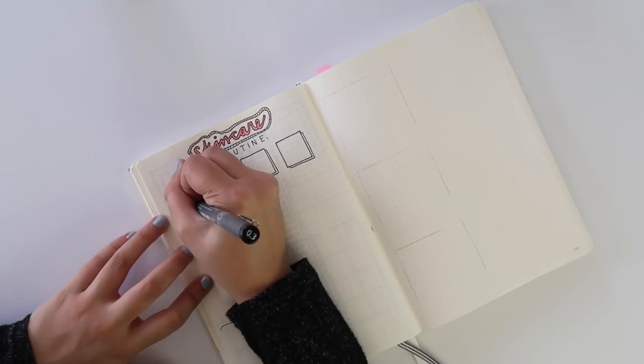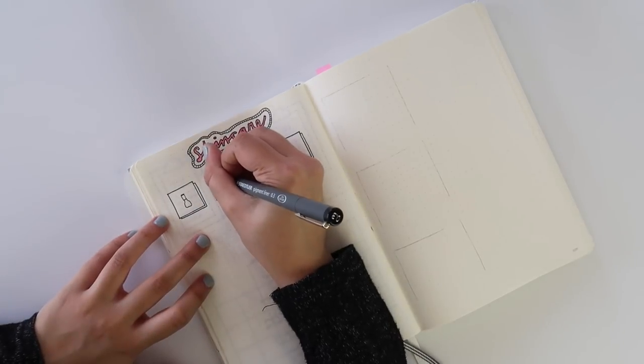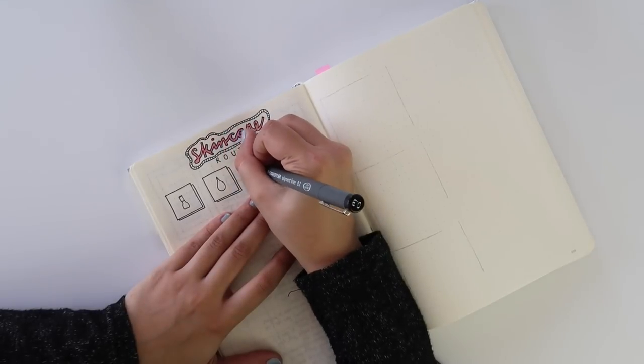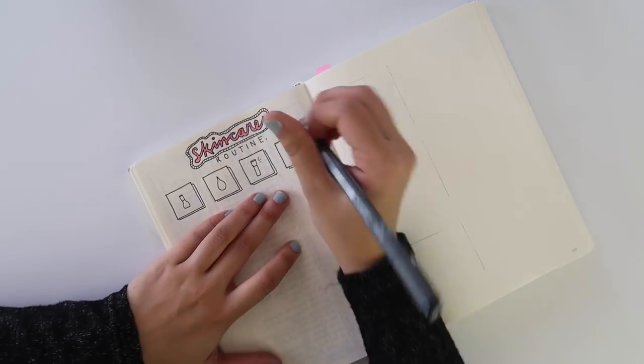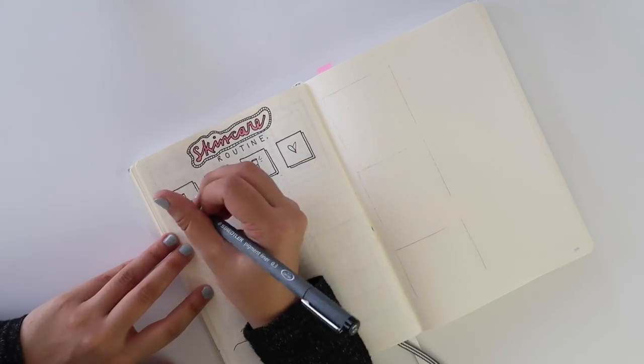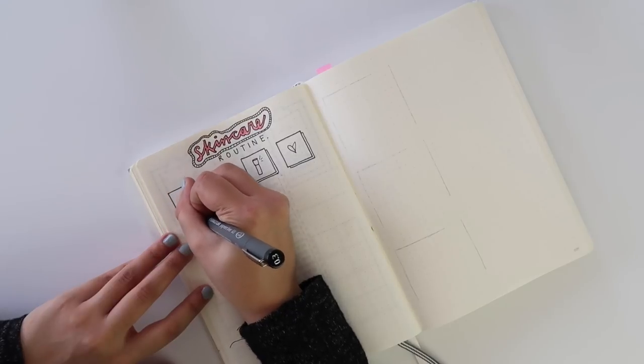Then I created a doodle for each step of my routine and below each step I wrote down some of the products that I use. I don't use all of these products day and night. I kind of switch between different things.